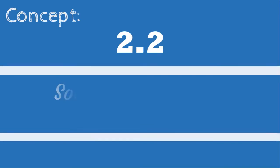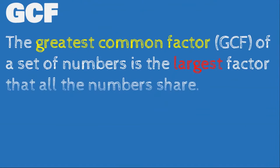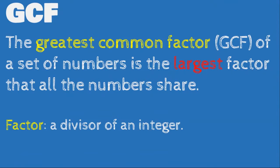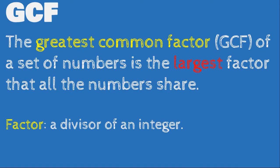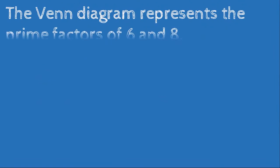We're back with concept 2.2: solve problems with GCF and LCM. We start with GCF — the greatest common factor of a set of numbers is the largest factor that all the numbers share, factor being a divisor of an integer. Next, LCM — the least common multiple of two integers A and B, usually denoted by LCM, is the smallest positive integer that is divisible by both A and B.